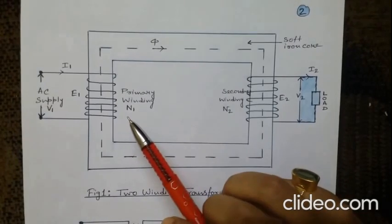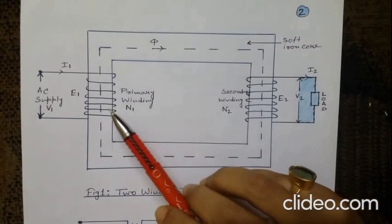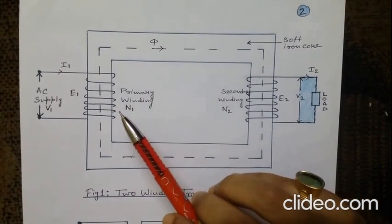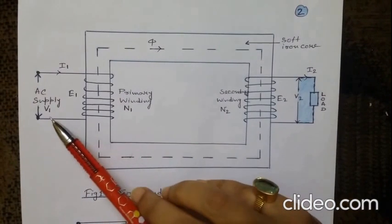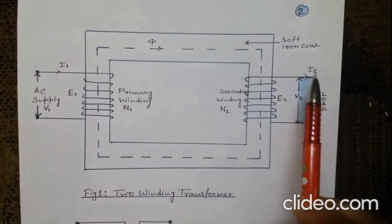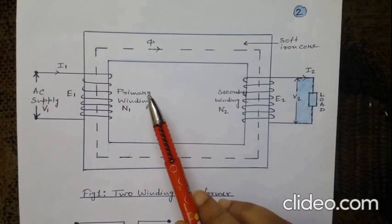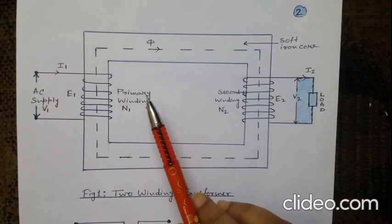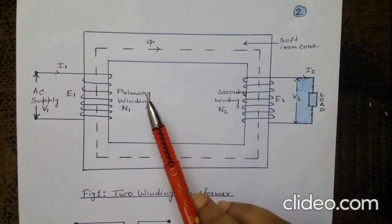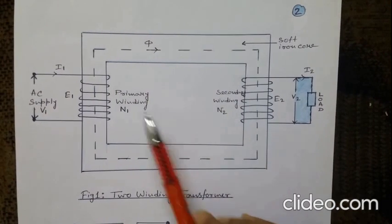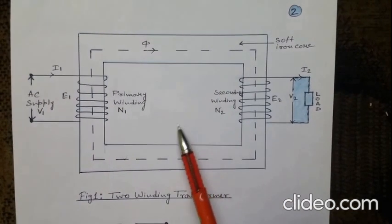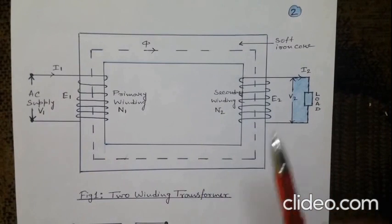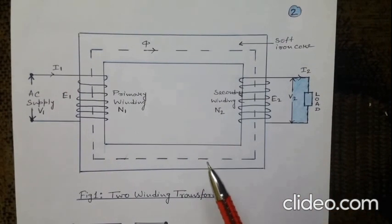In a two-winding transformer, the primary side has N1 turns and the secondary side has N2 turns. A load is connected on the secondary side and alternating supply voltage V1 is applied at the primary. When the load is not connected, a small current called no-load current flows, which produces an alternating flux in the core. This alternating flux links with both primary and secondary windings and induces EMF E1 and E2 by mutual induction. When the secondary side is open-circuited, no current flows in the secondary.